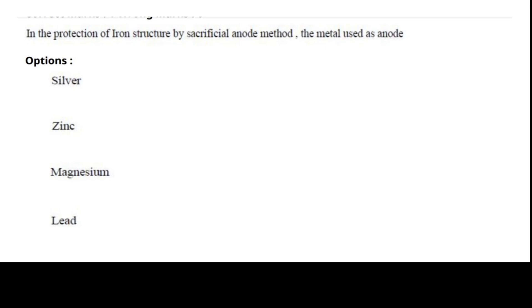Next question: in the protection of iron structure by sacrificial anode method, the metal used as anode. Options were silver, zinc, magnesium, lead, and the answer is magnesium.